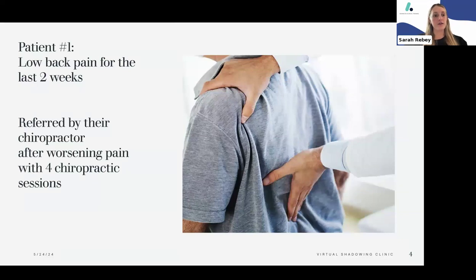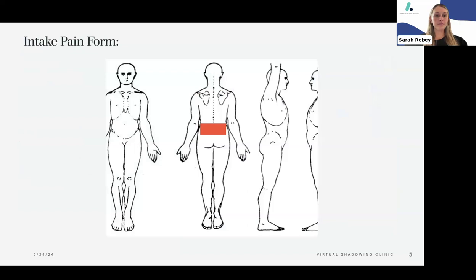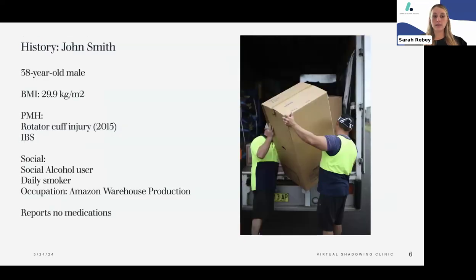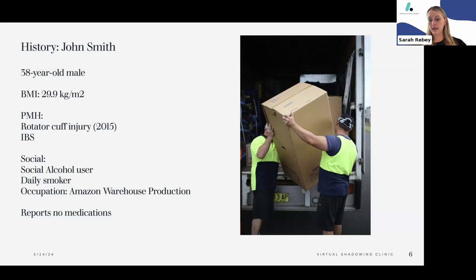Patient number one: on their form, it says they've had low back pain for the last two weeks. They were referred by their chiropractor after pain worsened with four chiropractic sessions. On his pain intake form, he circled his low back. His name is John Smith, a 38-year-old male with a BMI of 29.9 — signaling he's overweight. Past medical history includes a rotator cuff injury and IBS. He's a social alcohol user, daily smoker, and works in an Amazon warehouse. He takes no medications.